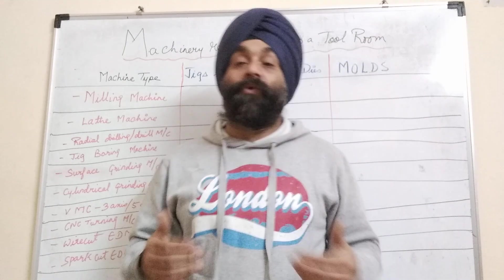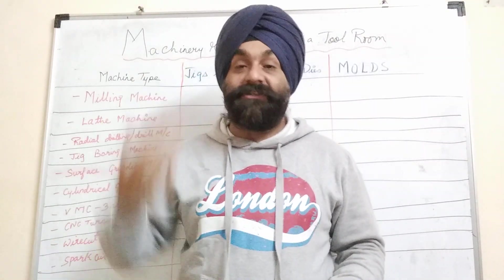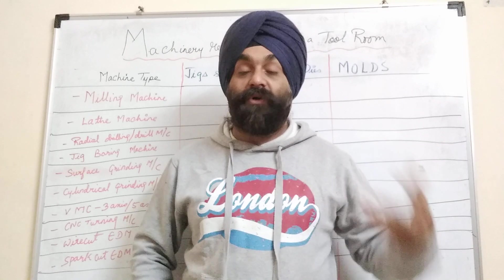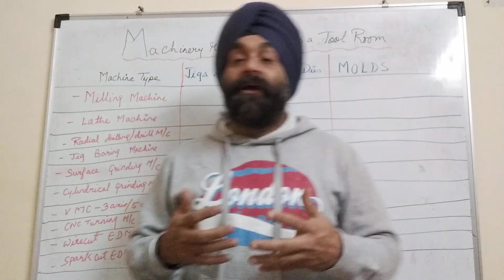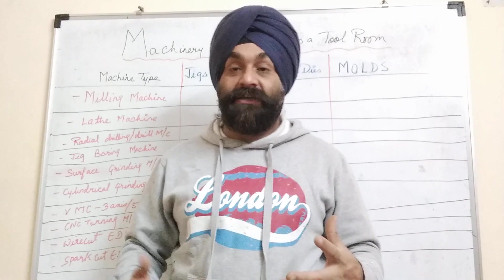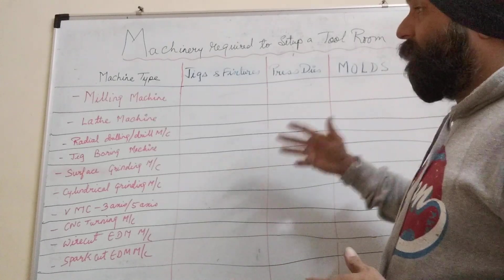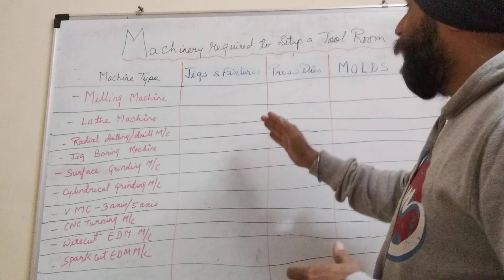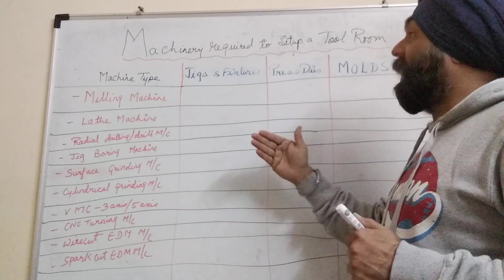In a tool room, you can't make every kind of tool — you need to specialize. You can specialize in press dies, jigs and fixtures, or molds such as casting molds, plastic molds, rubber molds, or forging dies. You have to target customers according to your specialization. I've classified the machinery requirements into three categories: jigs and fixtures, press dies, and molds.